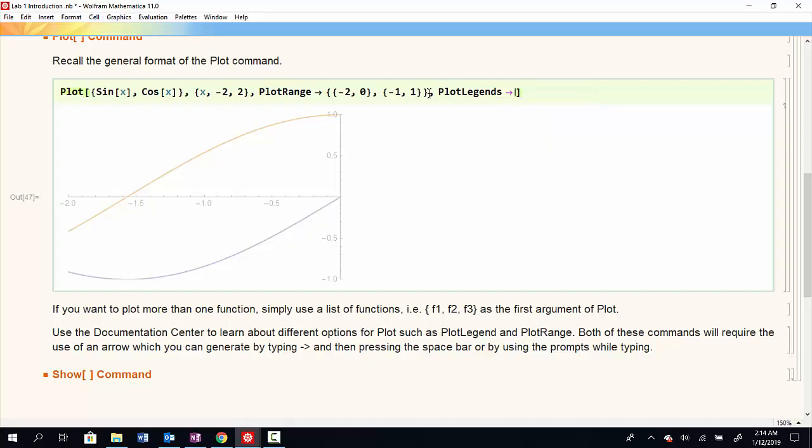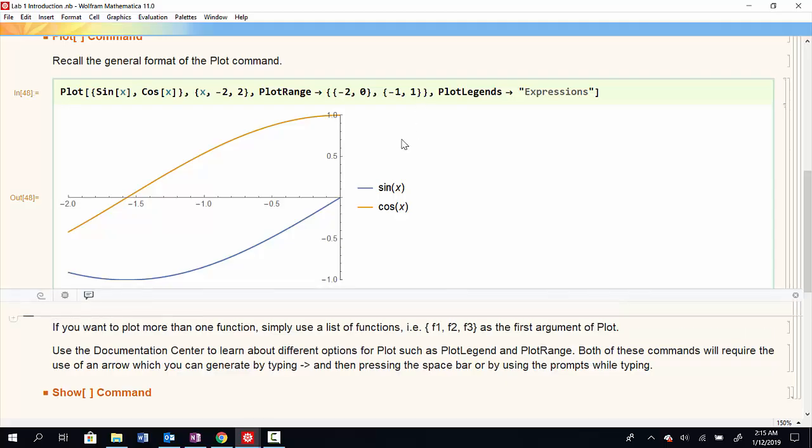And that would generate one of those arrows if I needed it. And now I could type in the command expressions. This would have auto-populated if I had let it earlier as well. And now I'll run that, and it's automatically going to generate a legend for my plot.